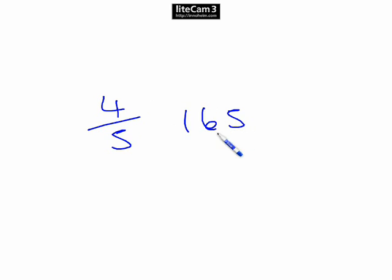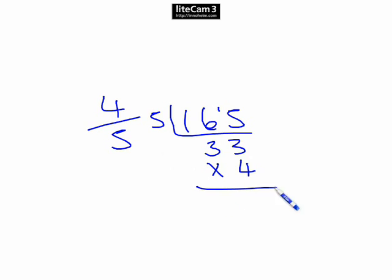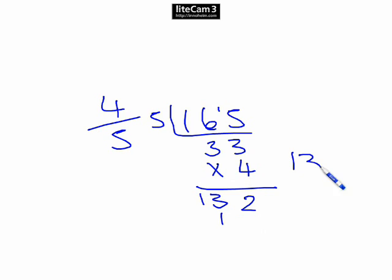This is just a simple division. 165 pupils — we want to find 4 fifths, so we work out 1 fifth first. 5 into 165: 5 into 16 goes 3, carry the 1, 5 into 15 goes 3, giving us 33. That's 1 fifth. We want 4 fifths, so 33 times 4 is 132. Our answer is 132 pupils.